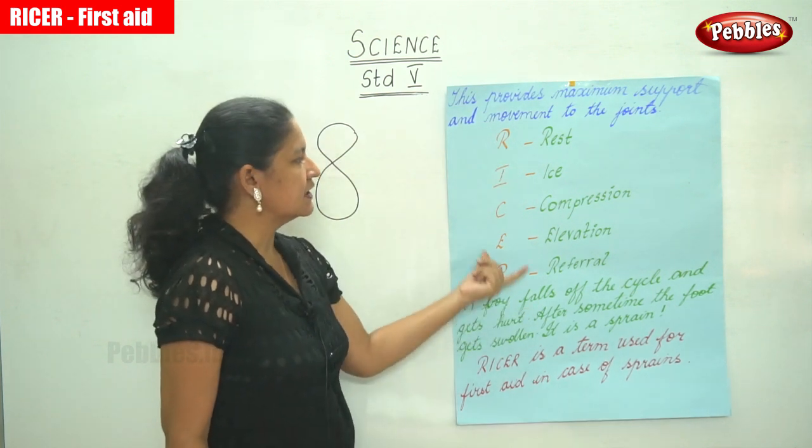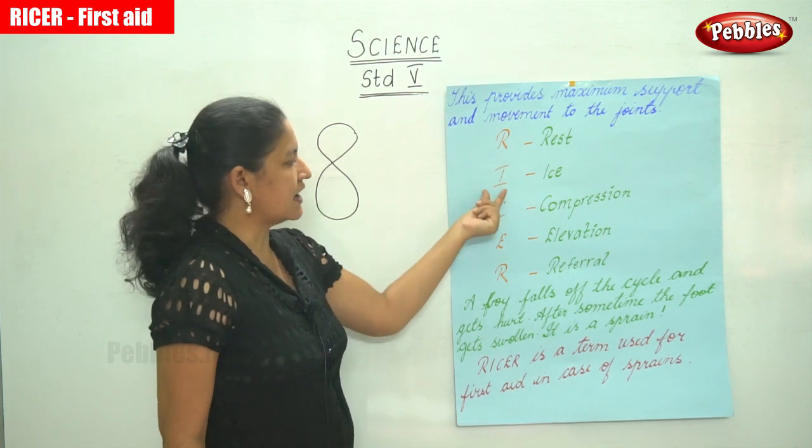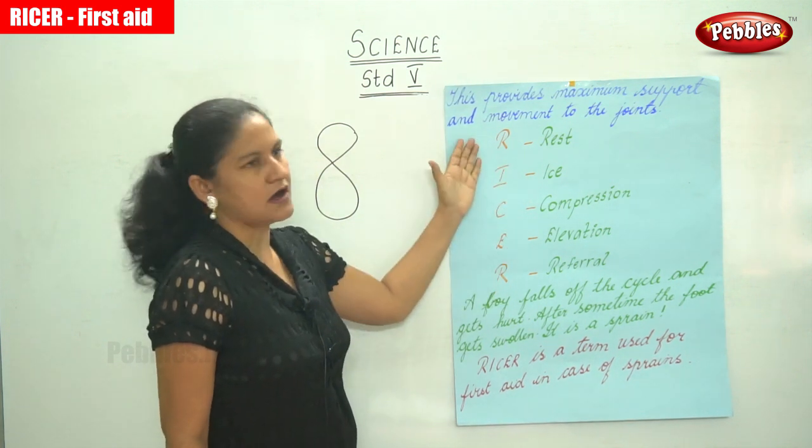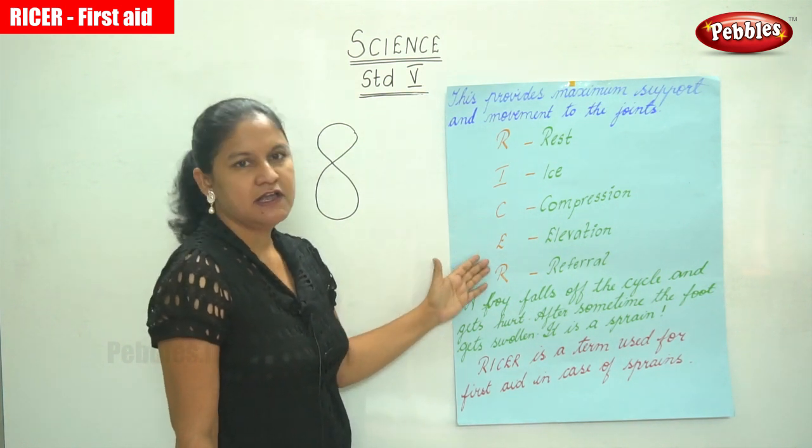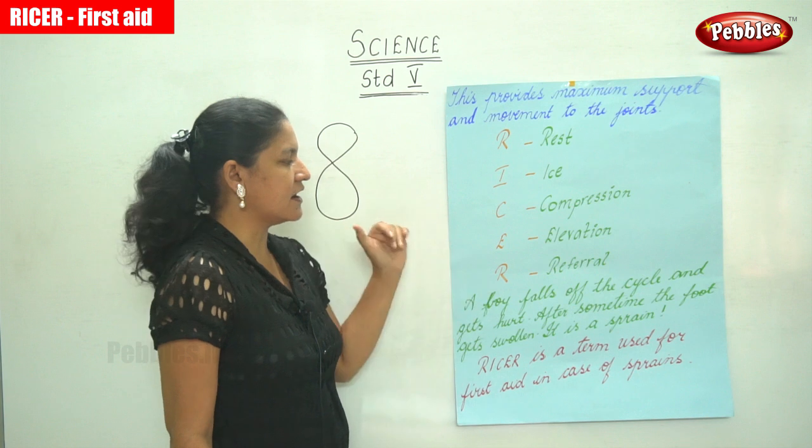We need to follow this step, R-I-C-E-R: R is for rest, I is for ice, C is for compression, E is for elevation, and R is for referral.